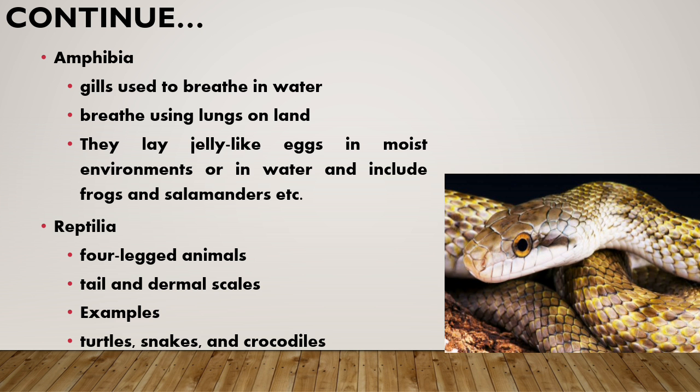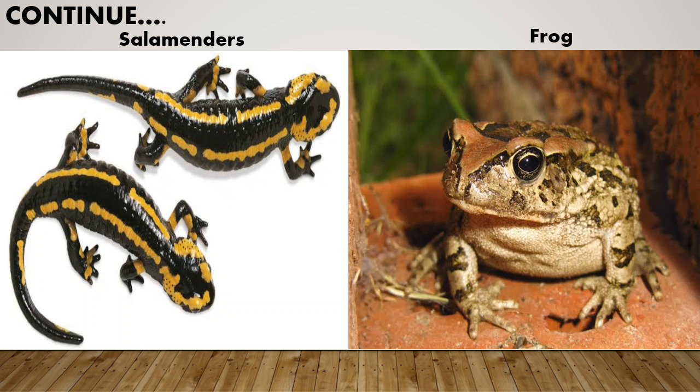Amphibians lay jelly-like eggs in a moist environment or in water. Examples include frogs and salamanders. Reptilia are mostly reptiles — they are four-legged animals with a tail and dermal scales. Examples include turtles, snakes, and crocodiles. You can see here in the diagram a frog and salamander.